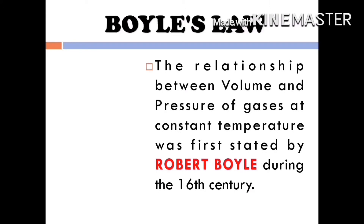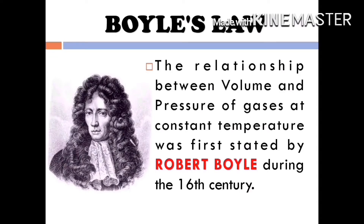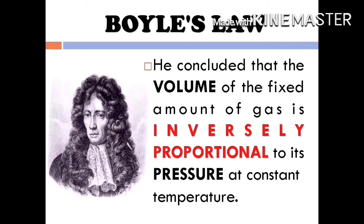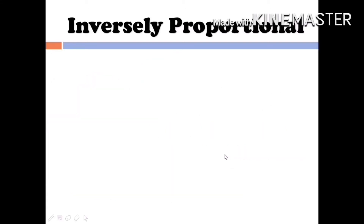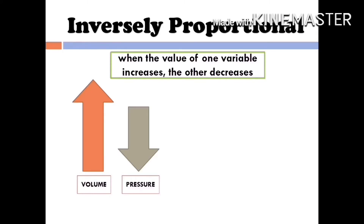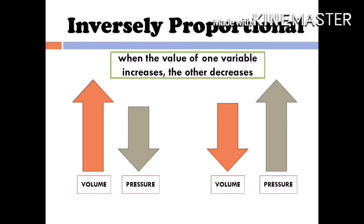The relationship between volume and pressure of gases at a constant temperature was first stated by Robert Boyle during the 17th century. He concluded that the volume of a fixed amount of gas is inversely proportional to its pressure at a constant temperature. Inversely proportional refers to the relationship between two variables where when the value of one variable increases, the other decreases — that is, when we increase the volume, the pressure will decrease, and when we decrease the volume, the pressure will increase.